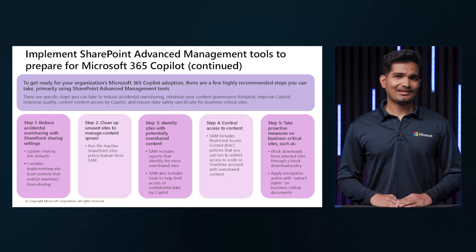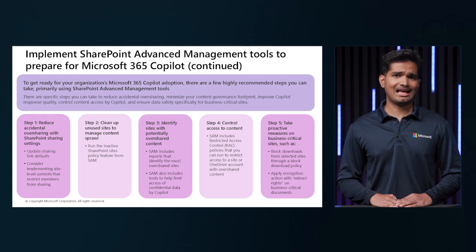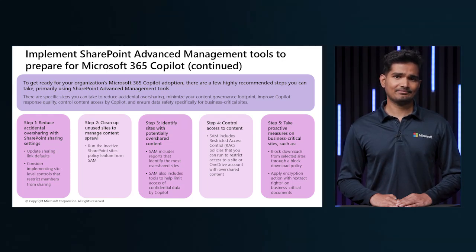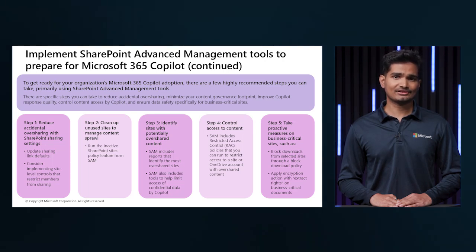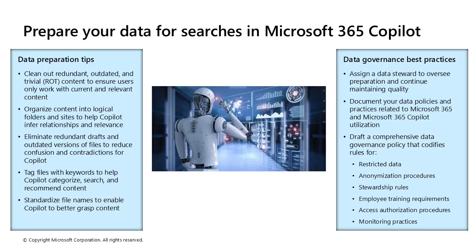Identify sites with potential overshared content — utilize SAM reports to identify the most overshared sites. Employ tools to limit Copilot's access to confidential data and control access to content. Apply restricted access control (RAC) policies to sites or OneDrive accounts with overshared content. Take proactive measures on business-critical sites: block downloads from selected sites using a block download policy, and apply encryption with extract rates on business-critical documents.